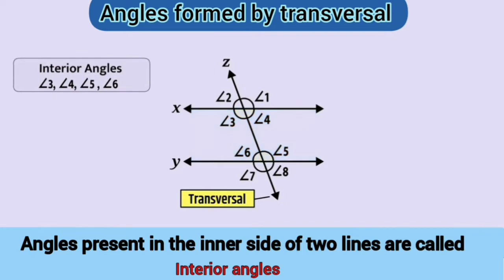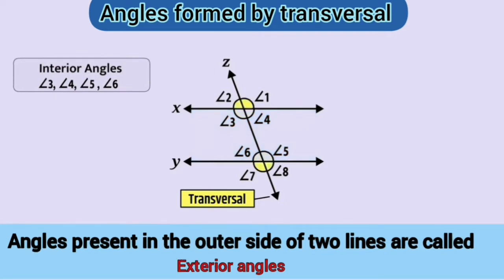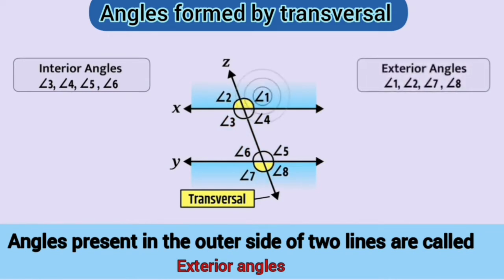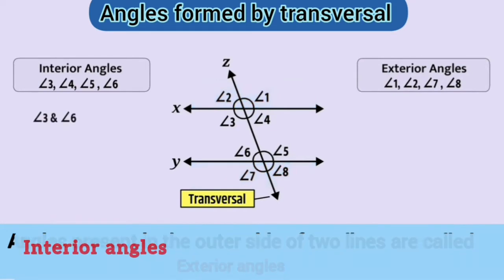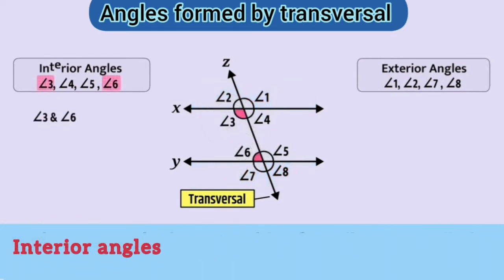Similarly, angles present in the outer side of two lines are called exterior angles. Here, angle 1, angle 2, angle 7, and angle 8 are exterior angles. In this, angle 3 and angle 6 are interior angles but are on the same side of the transversal.